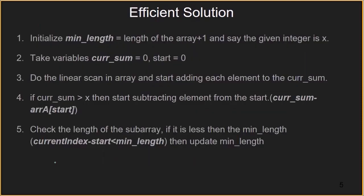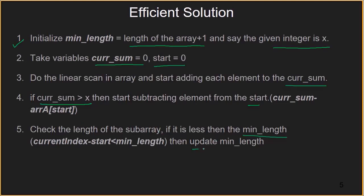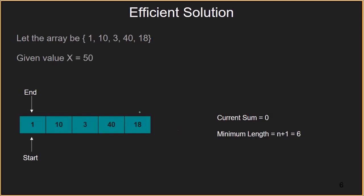Now let's look at an efficient solution. The first step is the same as the previous method: initialize minimum length as the length of the array plus 1 and let x be the given integer. Then we initialize variables current sum and start as 0. We then do a linear scan of the array, adding elements to the current sum. If the current sum becomes greater than x, we start subtracting elements from the start of the array. We also keep checking the length of the subarray — if it is less than the minimum length, we update minimum length. Let's have a dry run of the algorithm.